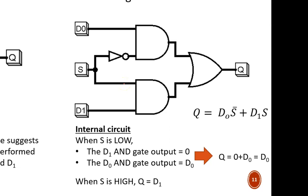Let's assume that S equals 0. This means that the D1 AND gate is forced to output 0, regardless of the actual D1 value. In other words, that data on D1 hits a roadblock.